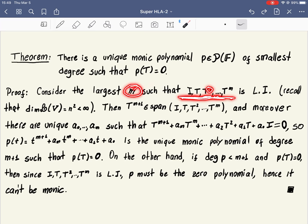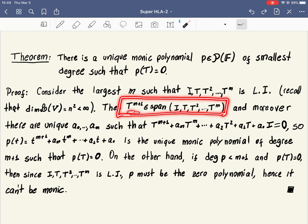So let M be the largest M for which this collection is linearly independent, the largest possible. Being largest possible means exactly that when we add M plus 1 here to the collection, then it is no longer linearly independent. It's linearly dependent exactly because T^(M+1) will be in the span of the previous ones. So T^(M+1) can be written as a linear combination of the previous ones.